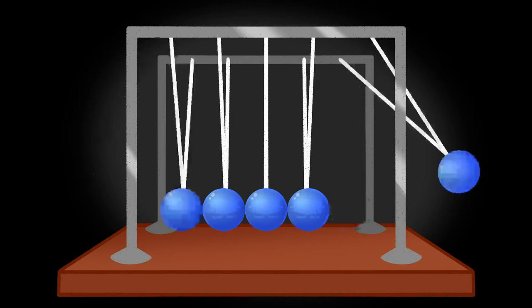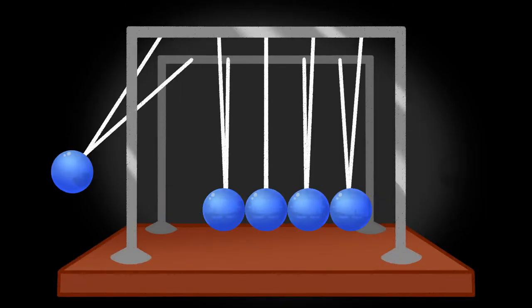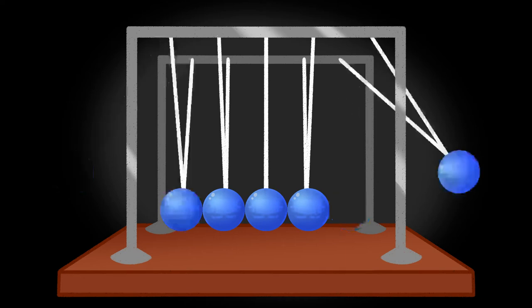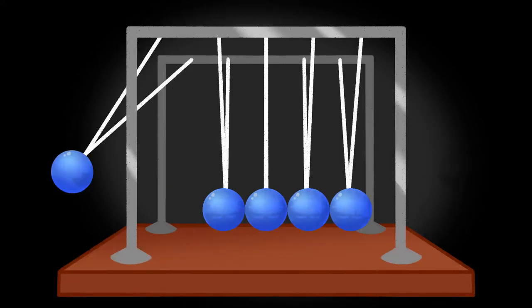The Newton's Cradle is a perfect example of an oscillatory system, which is a system or mechanism that moves particles back and forth. Another prime example of an oscillatory system are sound waves.